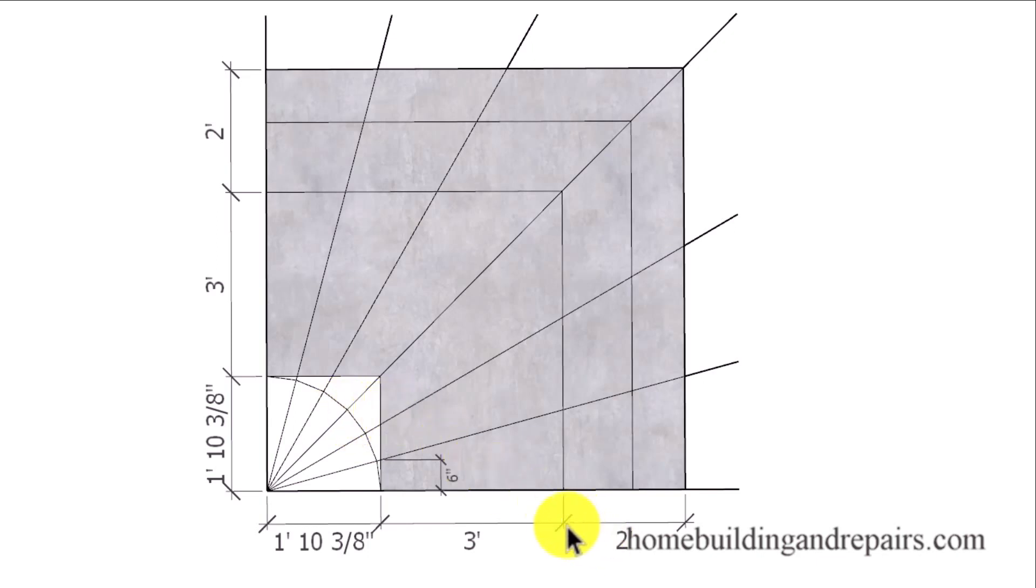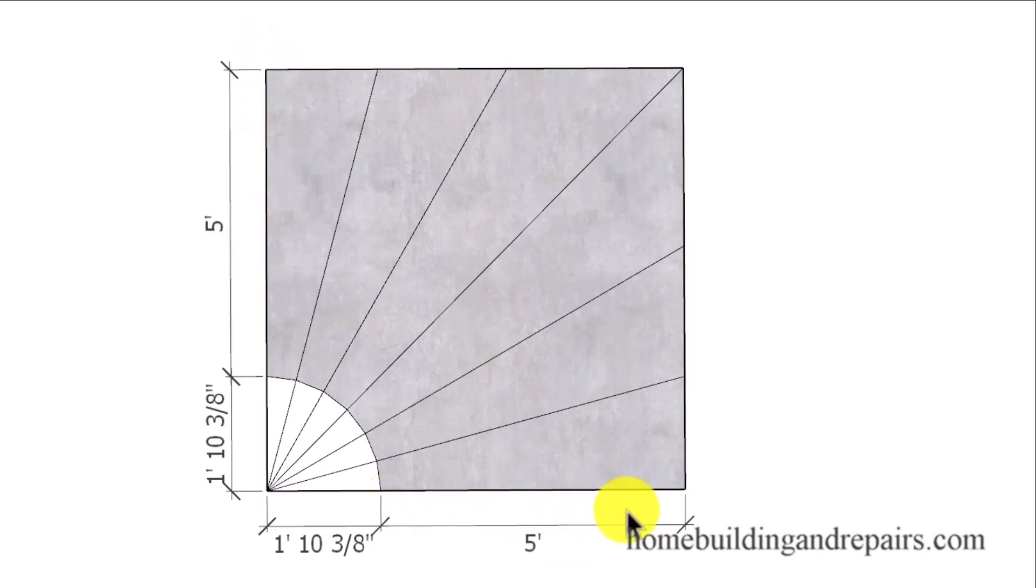If we wanted to make the stairway two foot longer for a total of five feet, we can simply move this line over around the perimeter like we did here to create a five foot wide winder type stairway with six steps.